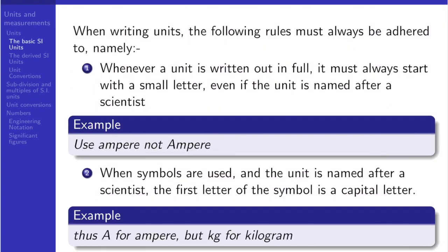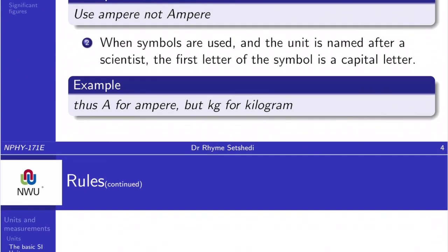When symbols are used and the unit is named after a scientist, the first letter of that symbol must be a capital letter. And that's why capital A, because there was a scientist by the name of Ampere.